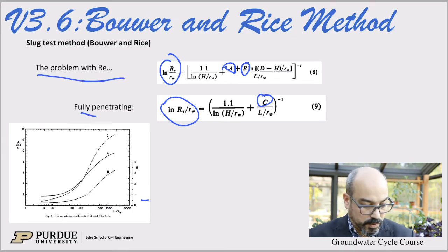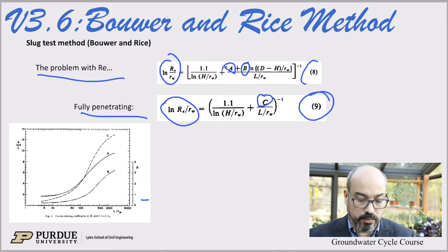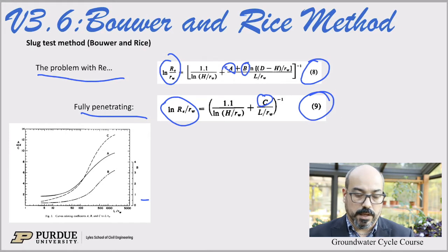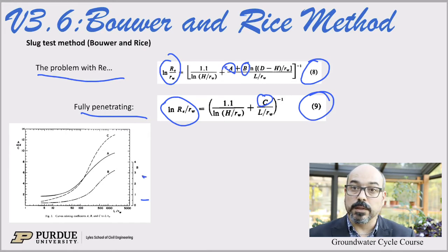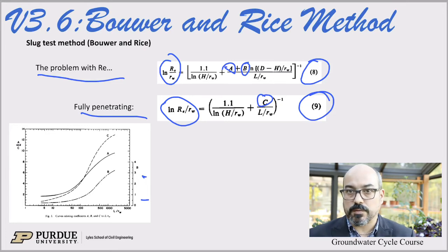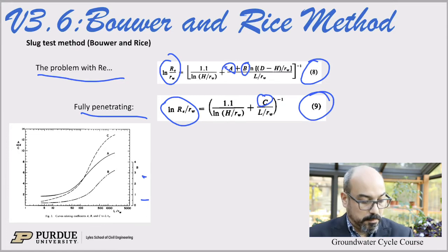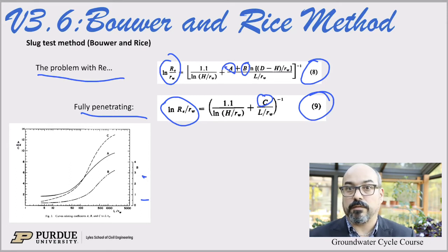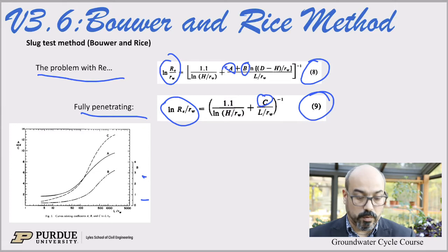If it's a fully penetrating well, you use one equation; if it's not a fully penetrating well, you use a different equation. The difference is that for a non-fully penetrating well you read a and b from the curves, while for a fully penetrating well you read c. It's just two different equations, but you simply read those a, b, c values from the plot, plug them in, and everything else should be given to you.